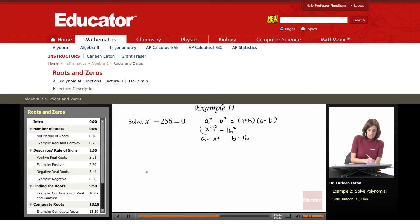So I can factor it as follows. A plus b, so that's x squared plus 16, times a minus b, or x squared minus 16.